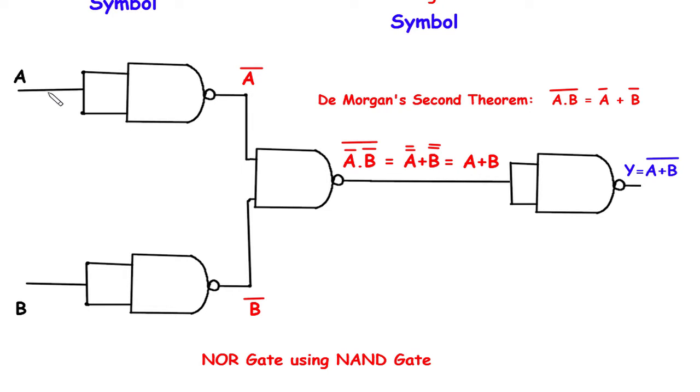Now the input for this NOT gate is A and the output of this NOT gate is A bar or A complement.